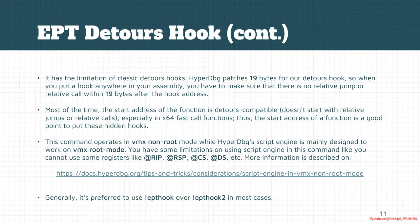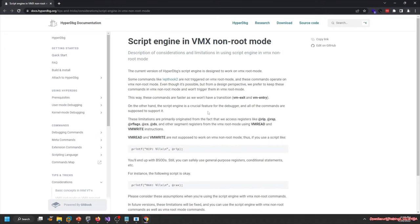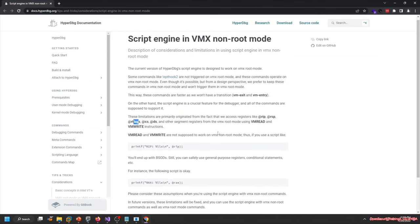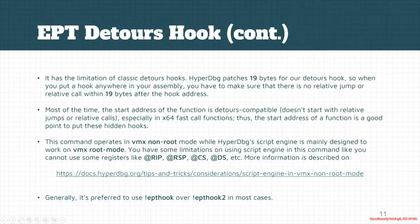This command operates in VMX non-root mode, which means it has limitations with the script engine. Since HyperDBG's script engine is mainly designed to work on VMX root mode, there are limitations here. For example, you cannot access RIP, RSP, or RFLAGS because they use VMREAD and VMWRITE instructions in the script engine. These limitations and considerations apply when using the script engine with `ept hook 2`, but everything works fine with the regular EPT hook, which is also the preferred option.